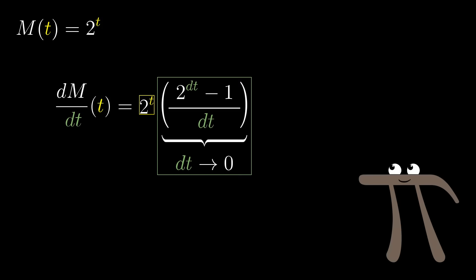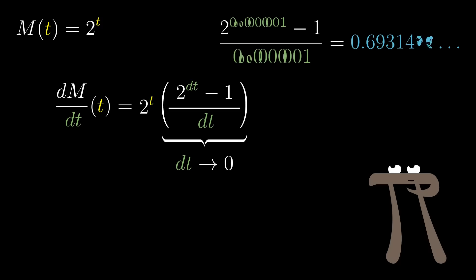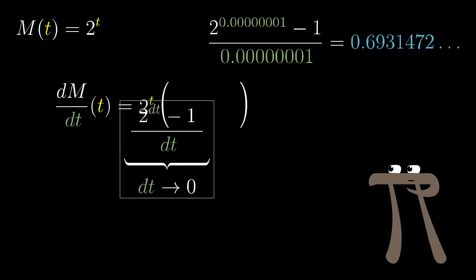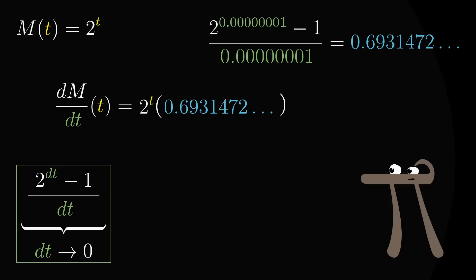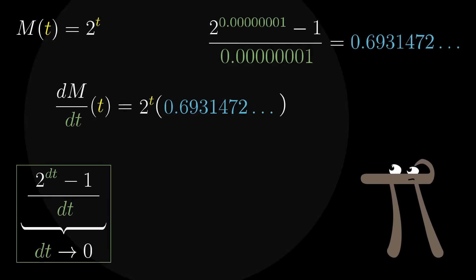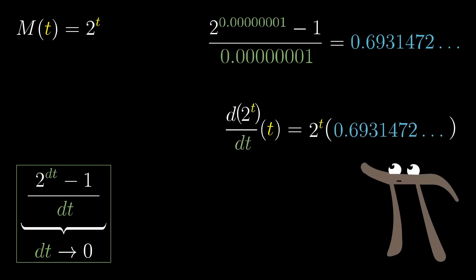You can go off to a calculator and plug in very small values for dt here. For example, maybe typing in 2 to the 0.001 minus 1 divided by 0.001. What you'll find is that for smaller and smaller choices of dt, this value approaches a very specific number, around 0.6931. Don't worry if that number seems mysterious. The central point is that this is some kind of constant. Unlike derivatives of other functions, all of the stuff that depends on dt is separate from the value of t itself. So the derivative of 2 to the t is just itself, but multiplied by some constant.